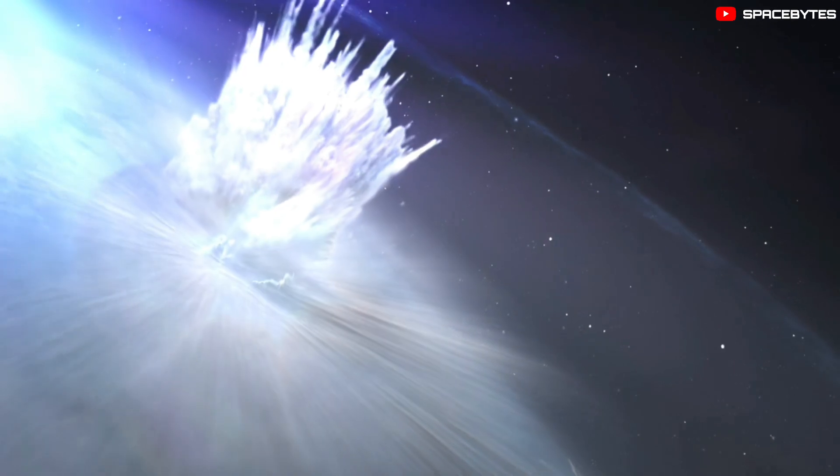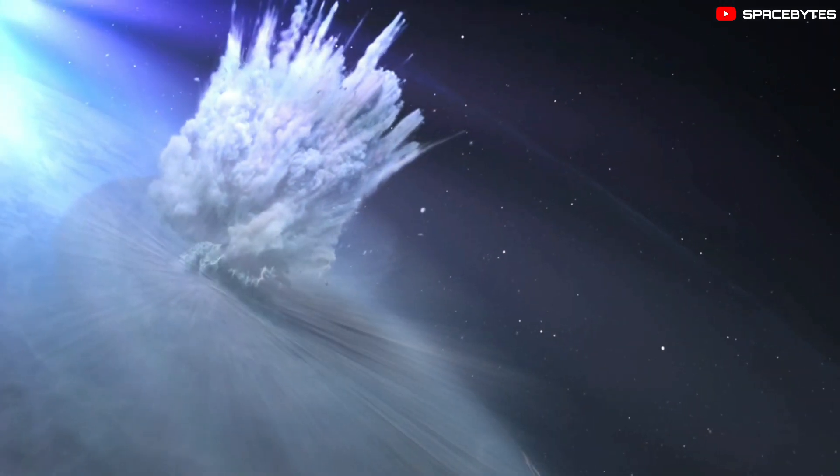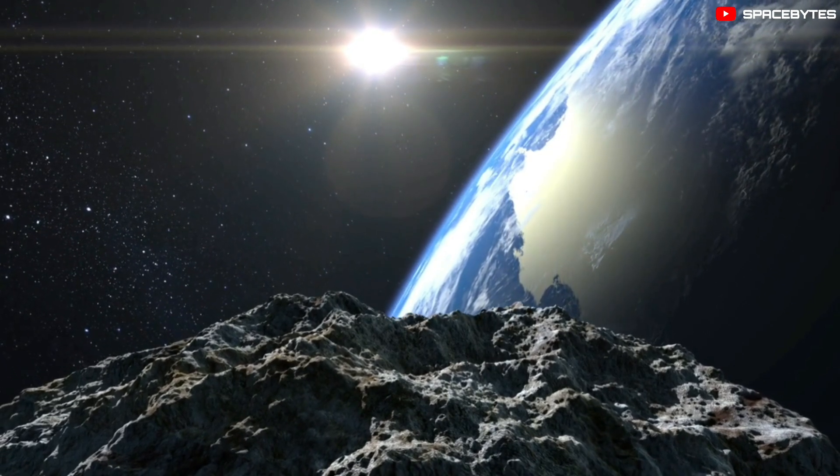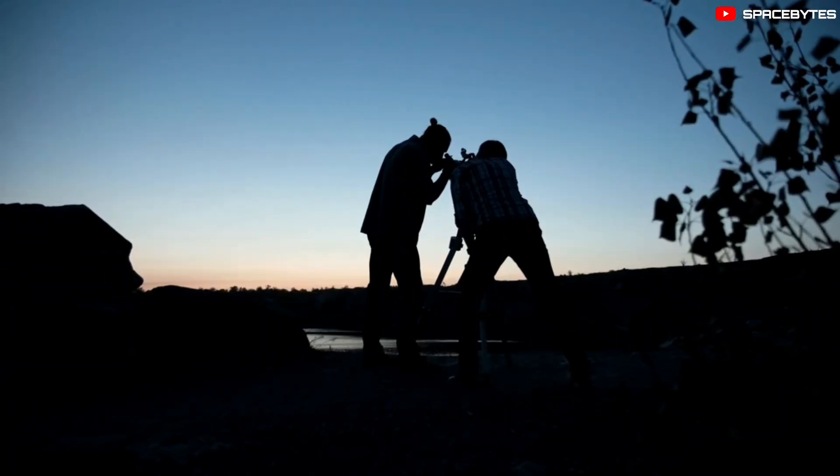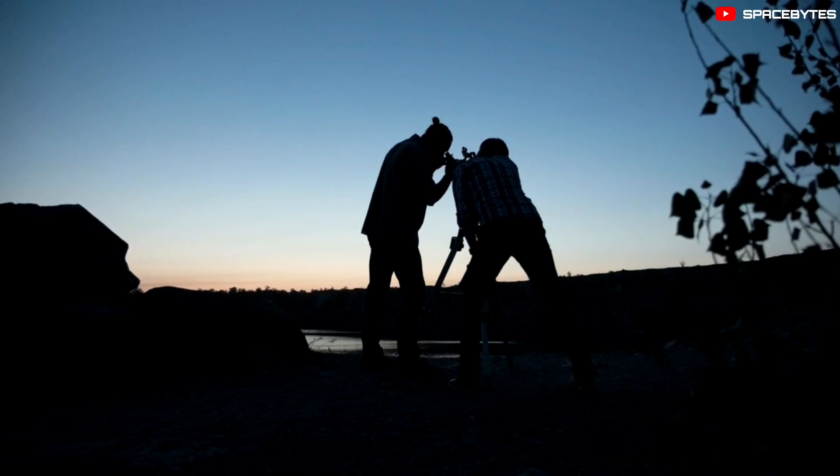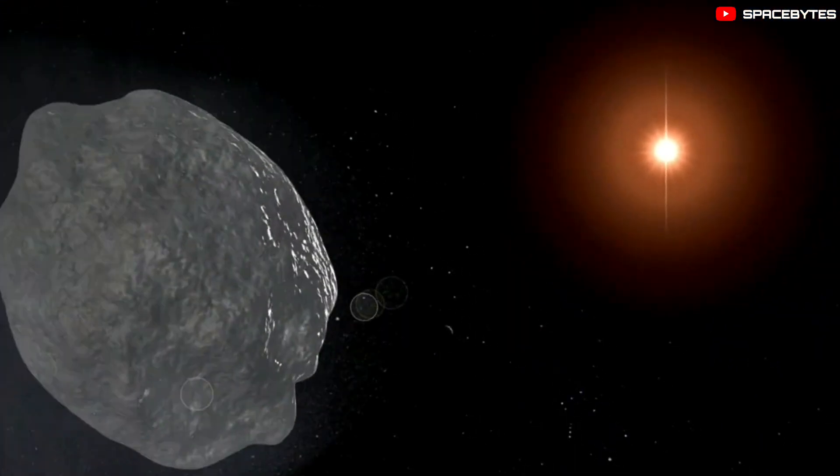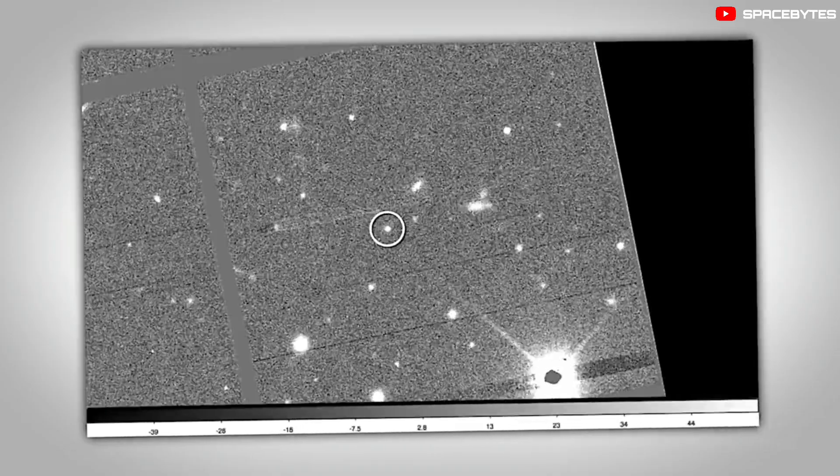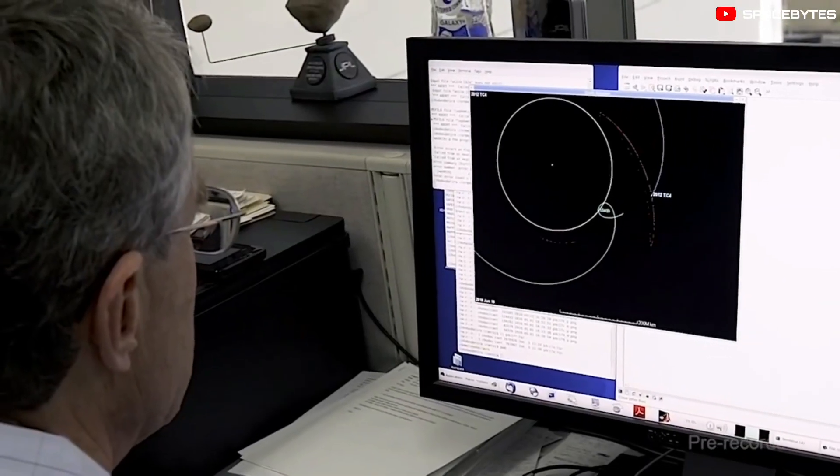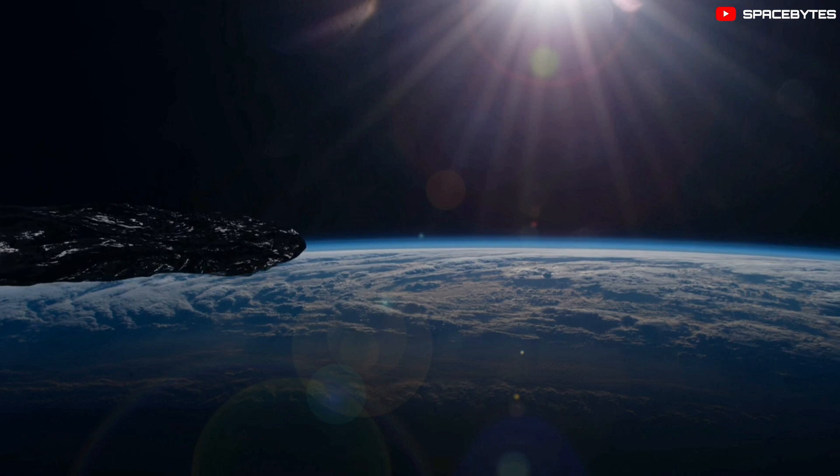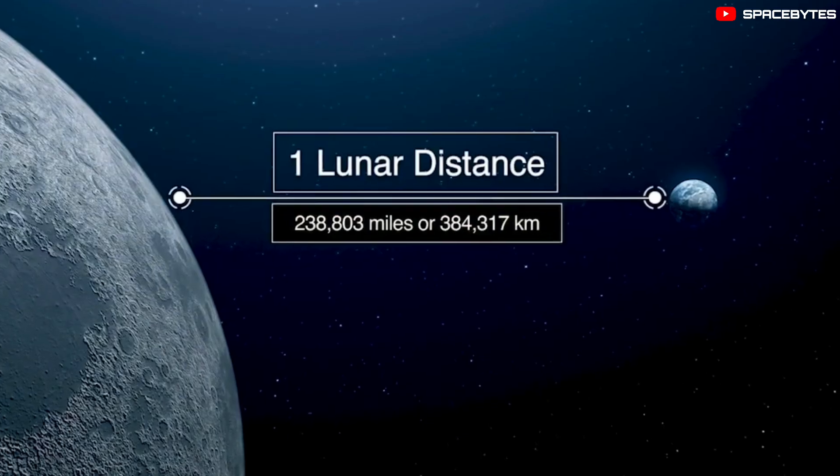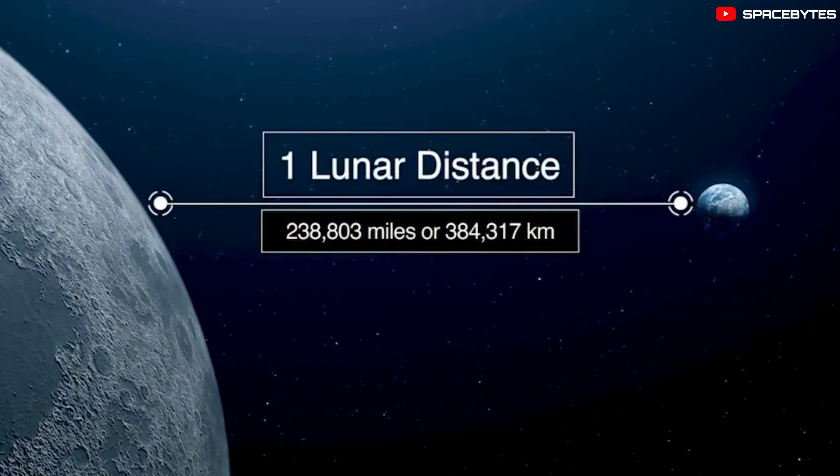However, 2022 OE2 missed the Earth by a wide margin. Although astronomers keep a check on all near-Earth asteroids for any potential danger towards Earth, asteroid 2022 OE2 managed to evade them and was discovered just a couple of days ago. The asteroid passed Earth at a distance of nearly 3.2 million miles, which is over 13 times the average distance between Earth and the Moon.